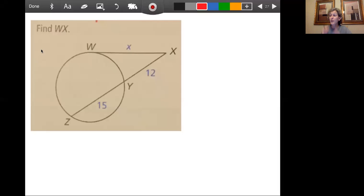Okay, let's do one more from section 10.6. So what we have here is we have a tangent and we have a secant, and they're intersecting outside the circle.